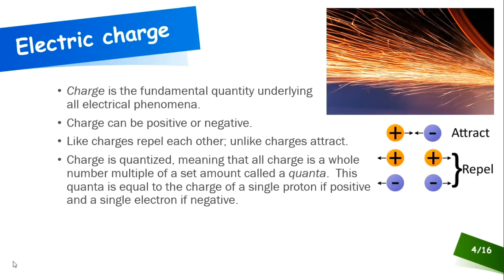Charge is a quantity that is quantized, meaning the charge is a whole-number multiple of a set amount called a quanta. That quanta is equal to the charge of a single proton if positive, or a single electron if negative. Everything that has electric charge has an amount that is a whole-number multiple of the charge on a proton or electron — that's what we mean when we say it's quantized.